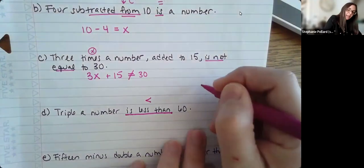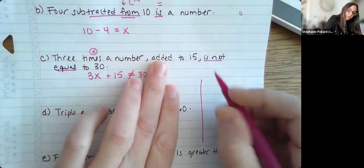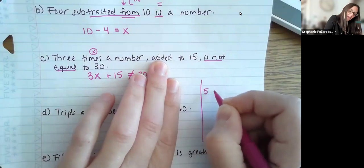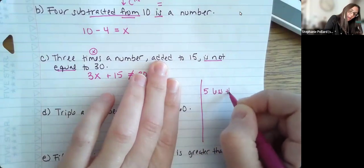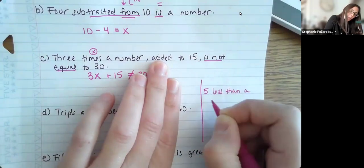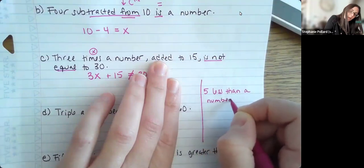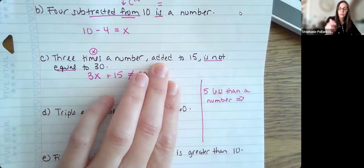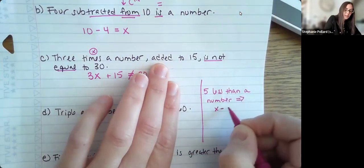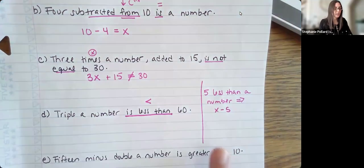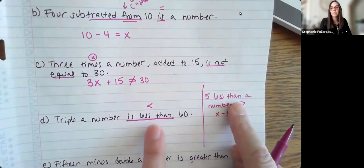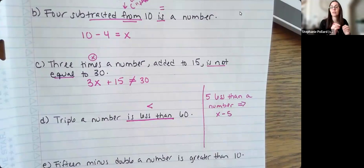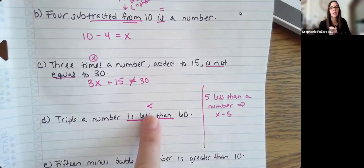So for instance, if I had something like 5 less than a number, something like that could actually be subtraction. Less than, again, the order would reverse there. So it would be x minus 5. Notice the difference here is is less than versus less than. So it's very subtle changes. You have to be really careful what the problem is trying to tell you. So is less than typically is an inequality sign instead.